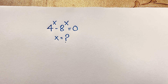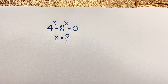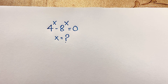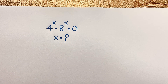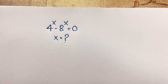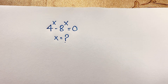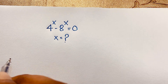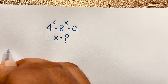Hello everyone, welcome to Rasha's classroom. Today we are solving an interesting exponential question, which is 4 to the power x minus 8 to the power x is equal to 0. x is equal to what? How to solve this interesting exponential math question?